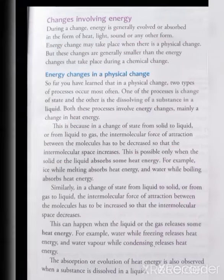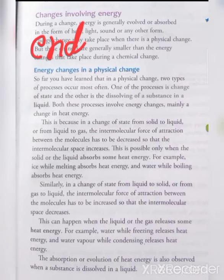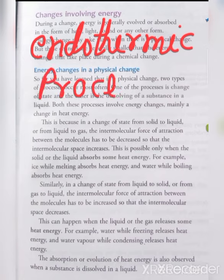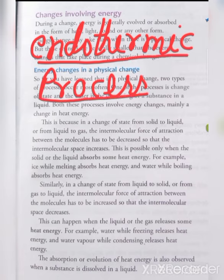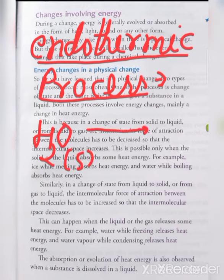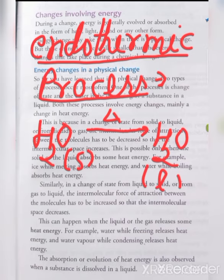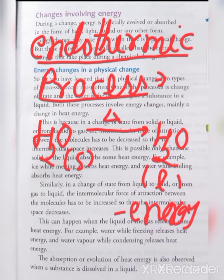Now we are going to discuss about endothermic processes. Endo means absorbed, thermic means heat. When heat is absorbed during any change, it is known as an endothermic process. Just like when the solid form of ice is heated, it is converted into liquid water — energy is absorbed during the process. This is known as an endothermic process.